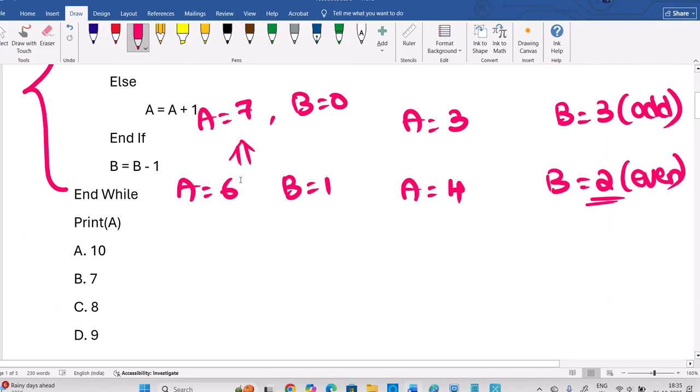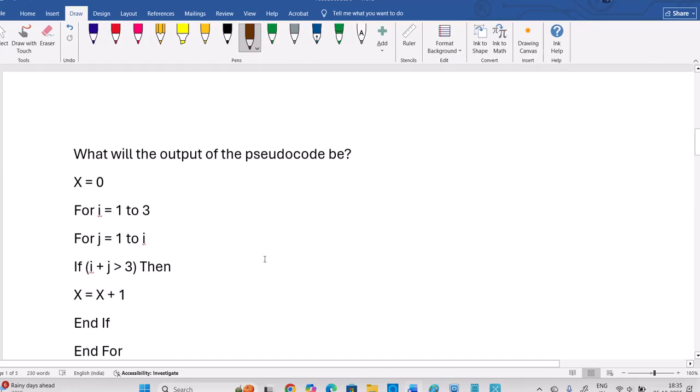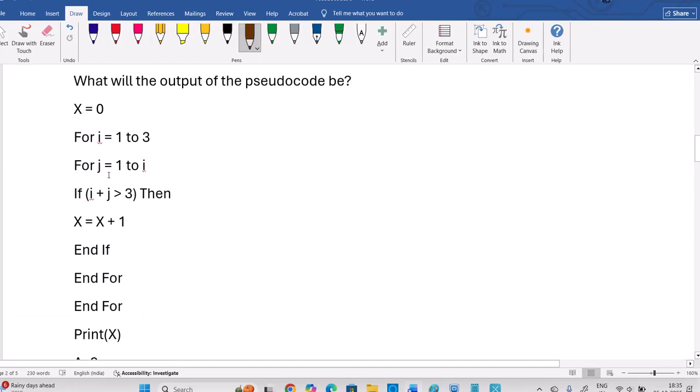Now, if you check, what you have to print is A value. Finally, A value is nothing but equal to 7. So option B is the answer. This is the first question with loop. Yeah, let us see about the next question here.